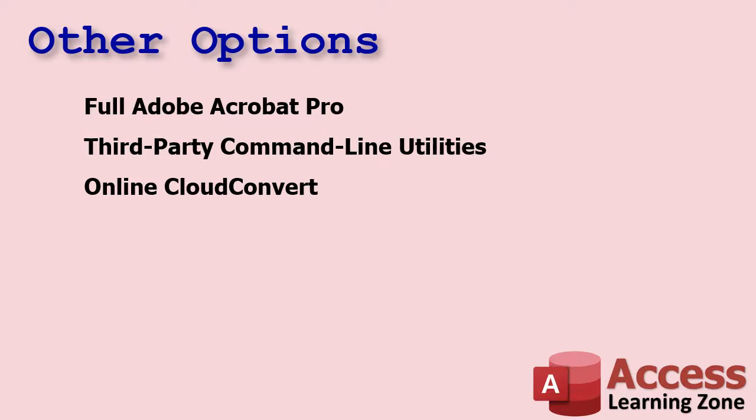If you have the full Adobe Acrobat Professional — which is paid software — you can automate the conversion process using VBA, because Acrobat Pro comes with a COM add-in that you can use your VBA commands to control. I've never personally used it but I've read good things about it. There are also some third-party command line utilities — I tried a couple but wasn't very happy with them. There are tons of them out there, so with some research you can probably find a good one and automate that from Access: save the PDF, run the utility to convert it to a doc file, then import it into Word.